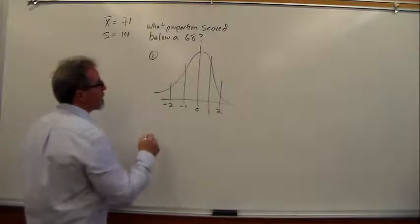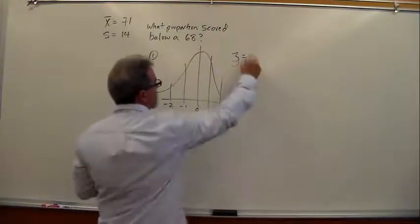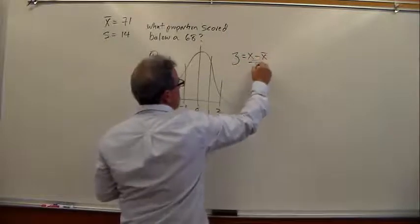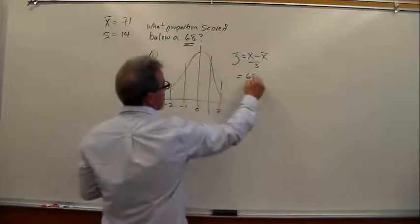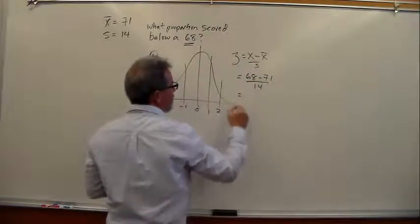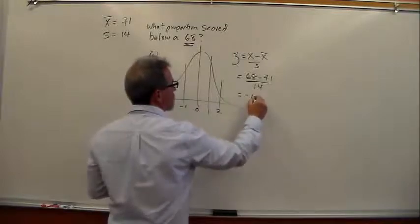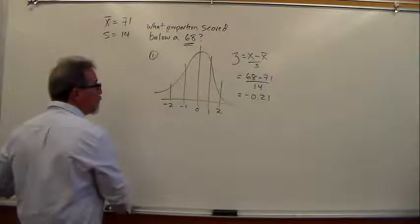Step two, we calculate the z-score, that's my z right there. We know the z is raw score minus the mean over s. So our raw score is in the problem right here, 68 minus the mean given to us, 71 over 14. That comes out to negative 0.21. So that is step two.